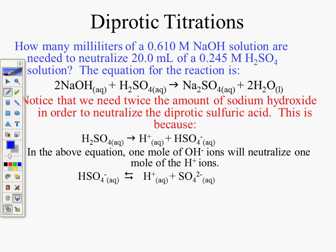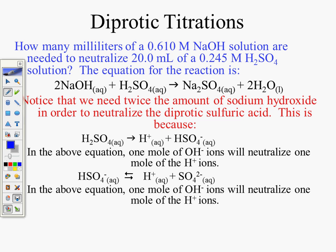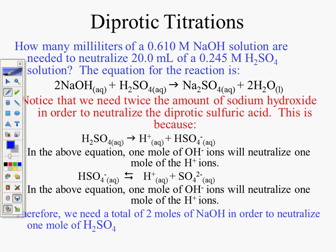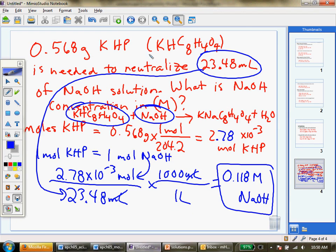Because sulfuric acid is diprotic, one mole of NaOH neutralizes one mole of H⁺, so you need two moles of NaOH for every one mole of H₂SO₄. Keep that 2:1 mole ratio in mind. Let's work through this together — first, find the moles of H₂SO₄.